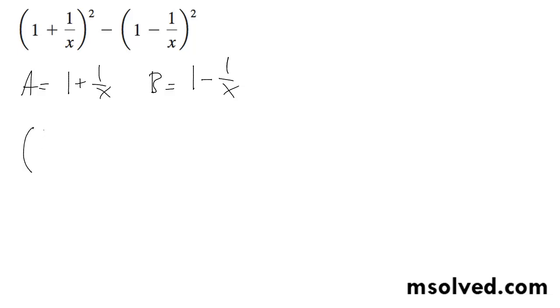So distributing this out, we get quantity 1 plus 1 over x minus quantity 1 minus 1 over x, times quantity 1 plus 1 over x plus quantity 1 minus 1 over x.